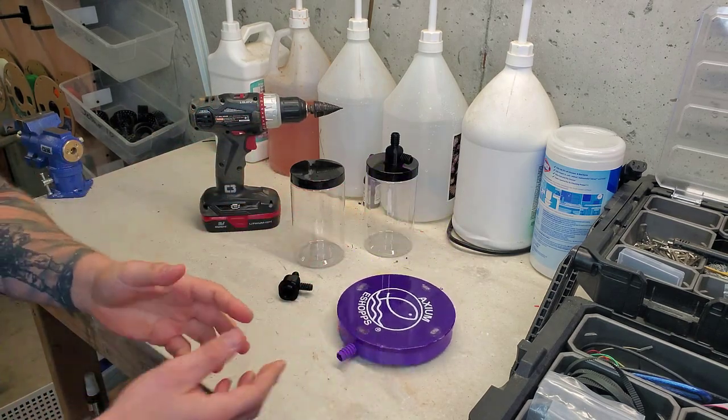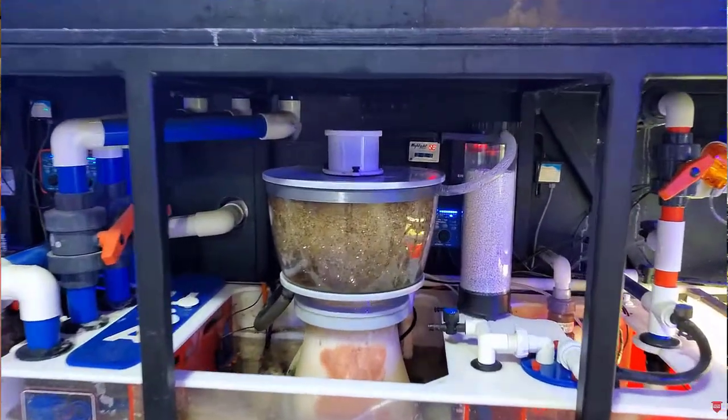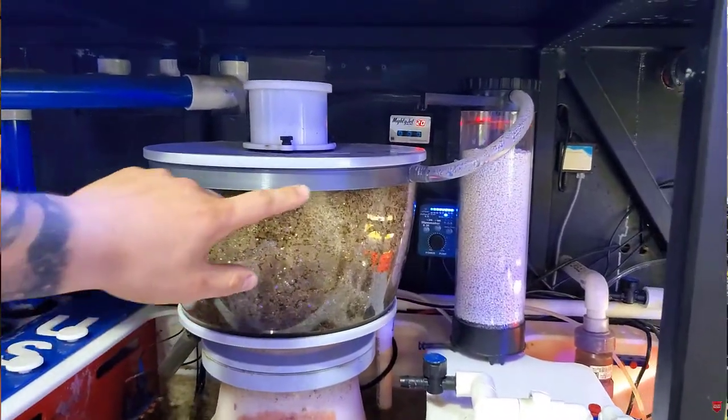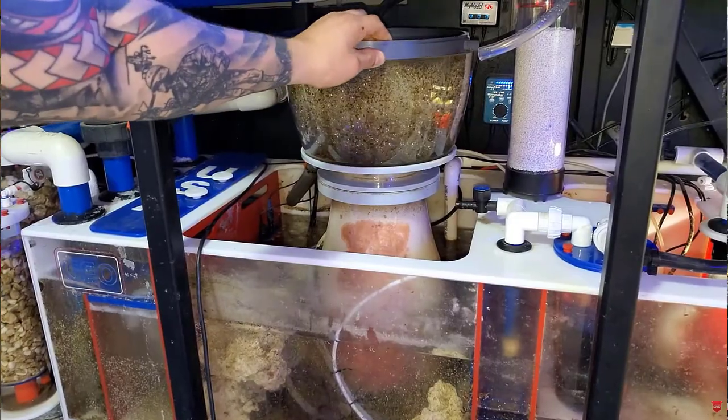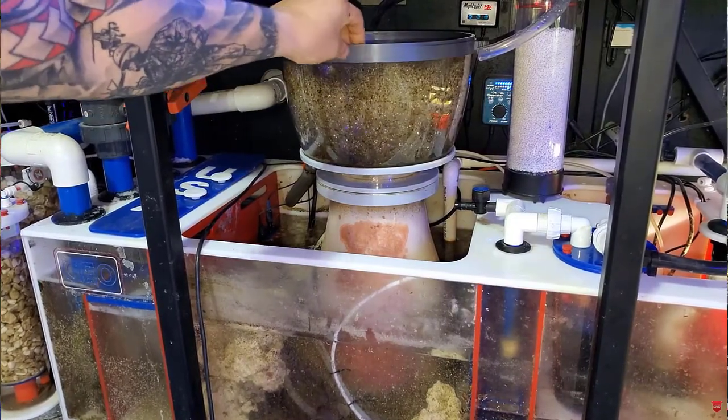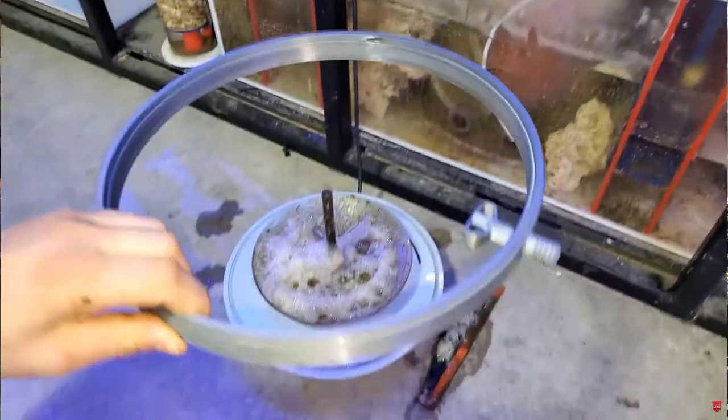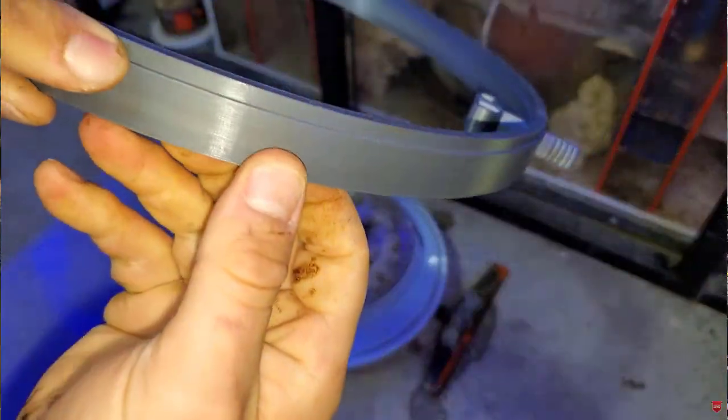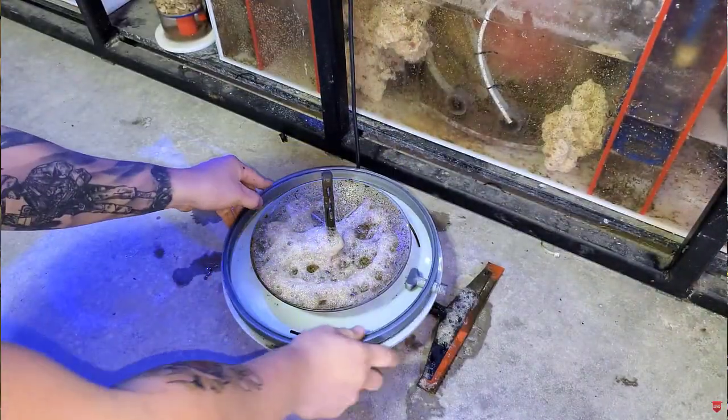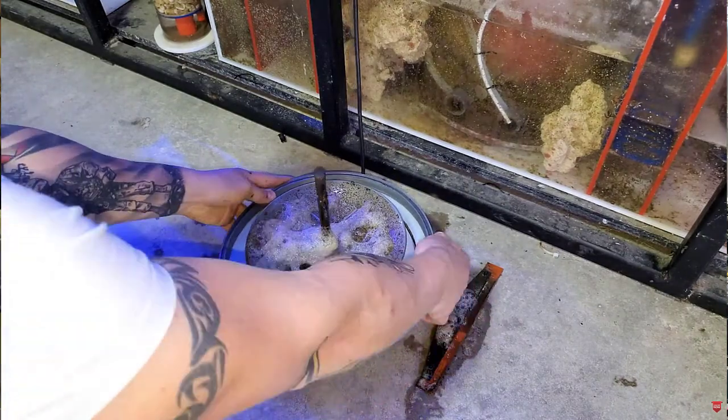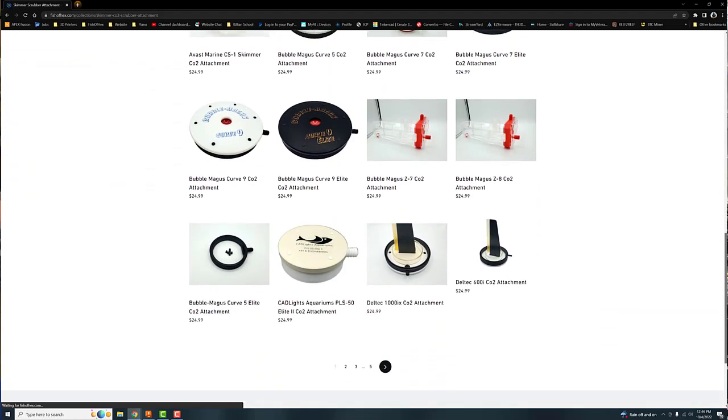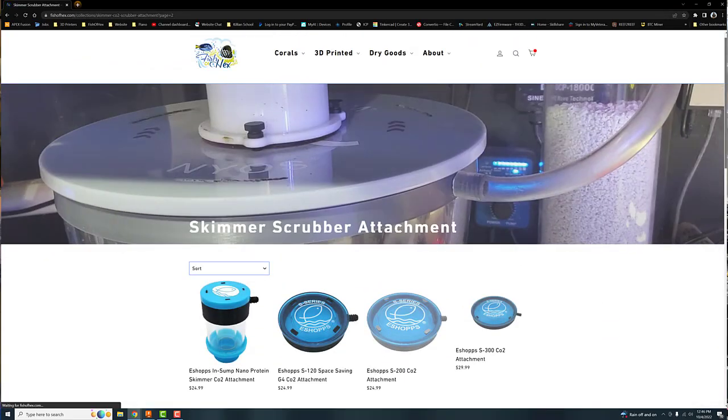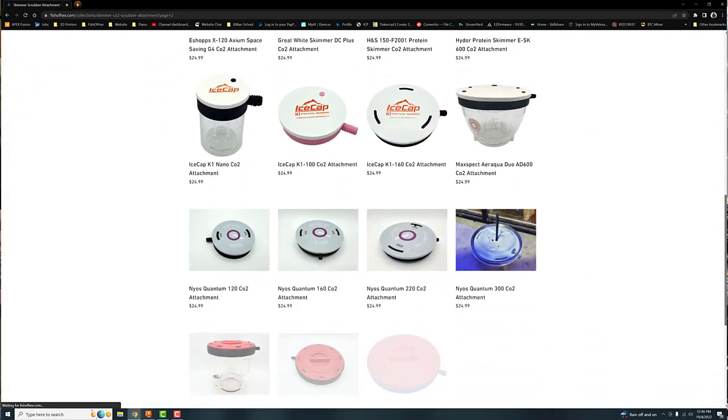About a year and a half ago I created the CO2 scrubber bridging ring. It's basically a ring that sits on your skimmer, your lid connects to it, and you can recirculate the air within your skimmer using your CO2 scrubber. This drastically cuts down on how much media you're consuming in your CO2 scrubber and helps elevate the pH a little bit more than it normally would.